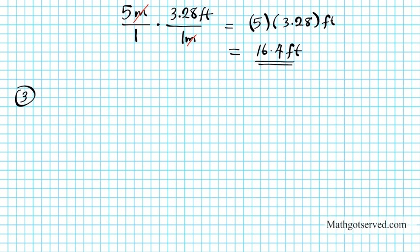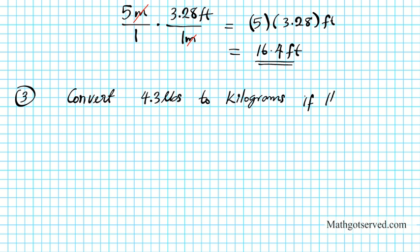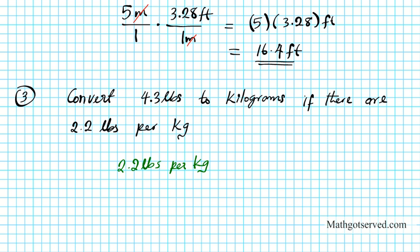Question 3. What if we are asked to convert 4.3 pounds to kilograms, given that there are 2.2 pounds per kilogram? The two conversion factors we can generate from this statement are 2.2 pounds over 1 kilogram, or its reciprocal: 1 kilogram over 2.2 pounds. These are our conversion factors because they have the same magnitude, so they are equal to 1.